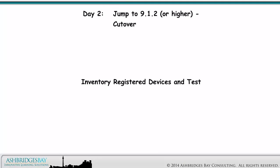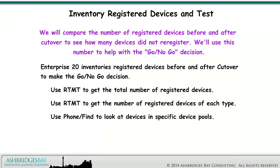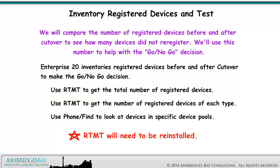We'll inventory registered devices and do some tests to decide whether or not to go with the cutover. We will compare the number of registered devices before and after cutover to see how many devices did not re-register, and use this number to help with the go/no-go decision. Use RTMT to get the total number of registered devices and the number of registered devices of each type. Use Phone Find to look at devices in specific device pools. Note that RTMT will need to be reinstalled.